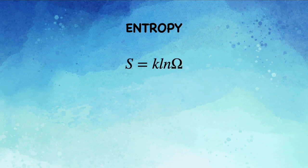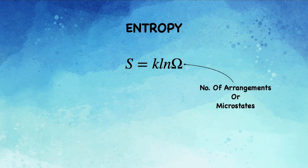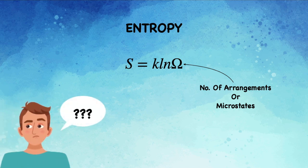Let's look at this equation. This says that S = k ln ω where ω is the number of arrangements or the microstates. This seems pretty confusing right? But just hold on, I will explain it.